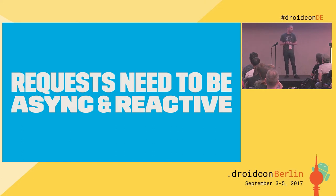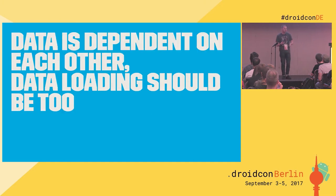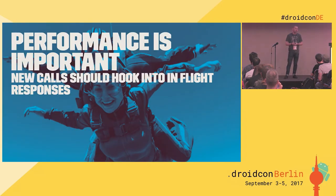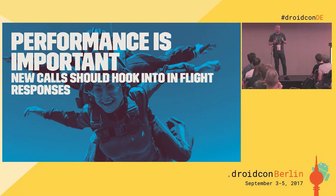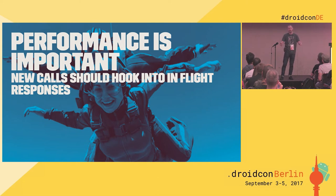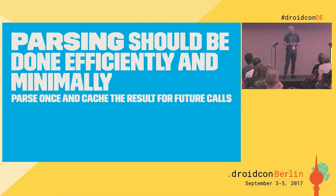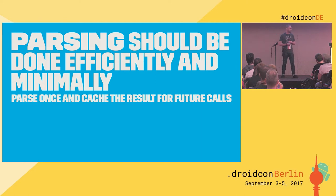We use RxJava, so it should be reactive. Data is dependent on each other, and data loading should be too. Performance is also important — we don't want to slam the disk or network for multiple requests for the same piece of data. If we make multiple requests, it should use the thundering herd principle: one gets through, satisfies the request, and fulfills the others. We should also parse something once; once we hydrate the object, we should cache it.